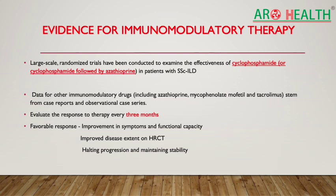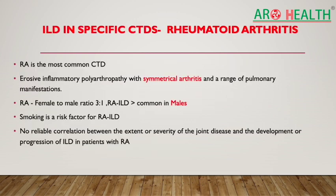When starting immunomodulatory therapy, the largest RCTs have been conducted on cyclophosphamide or cyclophosphamide followed by azathioprine in systemic sclerosis-related ILD. Other drugs like azathioprine, MMF, and tacrolimus have a role but data stems from case reports and case series. Mycophenolate is increasingly being used. Patient response should be monitored every 3 months, looking for improvements in lung capacity on HRCTs or halting disease progression.